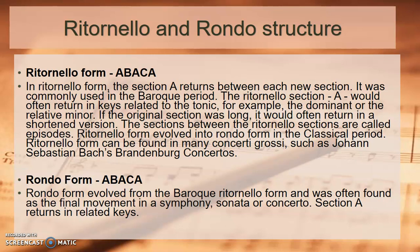Ritornello form evolved into rondo form, which developed in the classical period. Ritornello form can be found in many concerti grossi, such as J.S. Bach's Brandenburg Concerto. Rondo form (also A, B, A, C, A) evolved from the Baroque ritornello and was often found as the final movement in a symphony, sonata, or concerto. Section A returns in related keys.